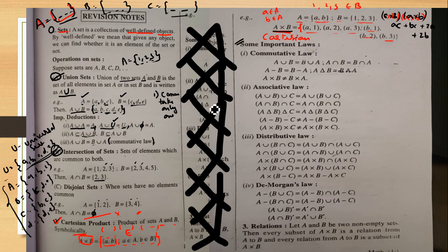Now some important properties. The important properties are: commutative, associative, distributive, and De Morgan's law. De Morgan's law is very important.